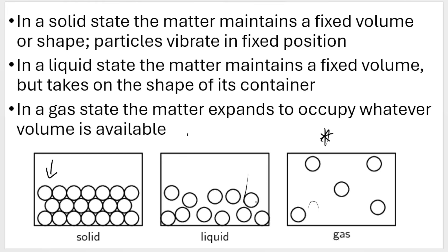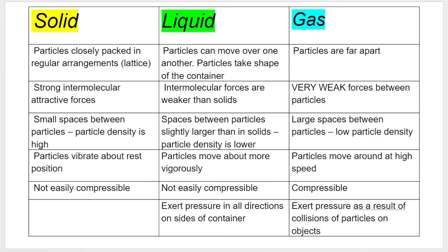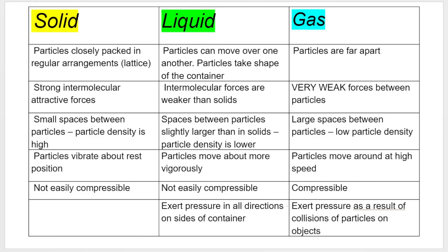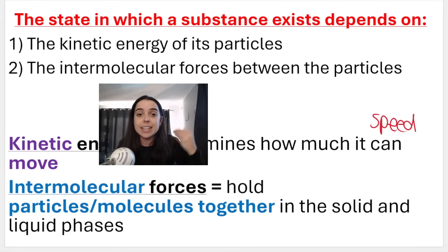There are larger spaces between the particles in a gas, which means they have a low particle density. Remember, density can be calculated by taking the mass and dividing it by the volume. Gases also have particles that move around at high speeds because they have high kinetic energy, and they are compressible. Importantly, gases exert pressure on the sides of the container because of collisions of particles.